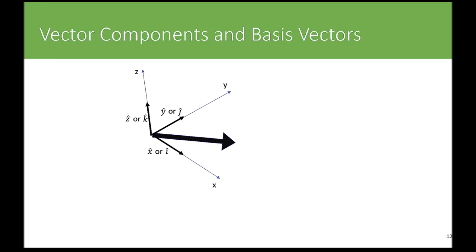The x-hat unit vector — sometimes called i-hat — points in the direction of increasing x coordinate. Likewise, y-hat (sometimes j-hat) points in the direction of increasing y, and z-hat (or k-hat) points in the direction of increasing z. Once you have the coordinate system and the unit vectors in place, you are in a position to find the components of your vector.